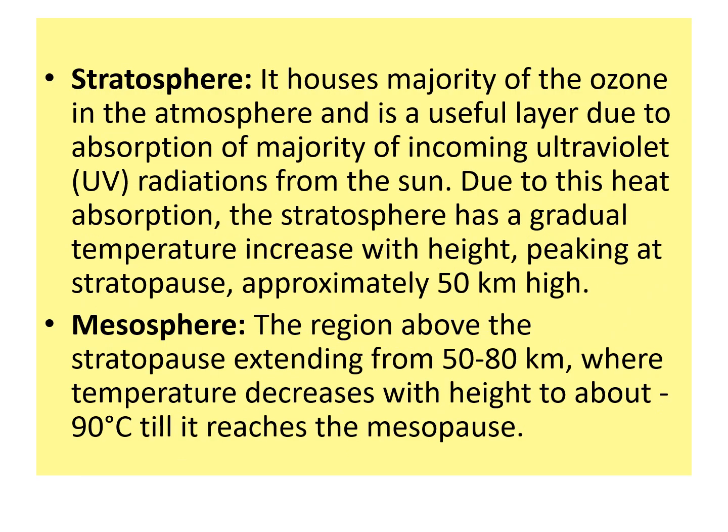The stratosphere is the next layer after the troposphere. It houses the majority of the ozone in the atmosphere and absorbs the majority of incoming UV radiations from the sun. Due to this absorbance, there is a gradual temperature increase with height — which was opposite in the troposphere, where temperature decreased with increasing height.